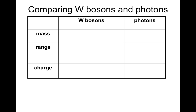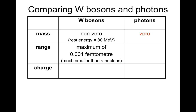Let's recap W bosons and photons. W bosons have non-zero mass — rest energy about 80 mega electron volts. Photons have a mass of zero, though at university I calculated the photon to have a mass of 10 to the minus 53 kilograms — for all intents and purposes, it's zero. Range of bosons is 0.001 femtometers, much smaller than the nucleus — incredibly short. Photons, the complete opposite: infinite range. Charge of bosons: W plus is positive, W minus is negative. Photons have zero charge.